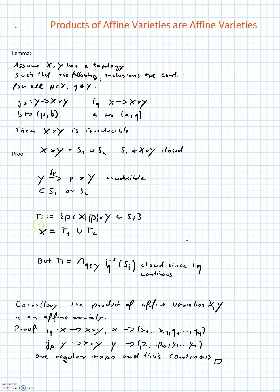So we can define sets Ti as the set of points p in X such that p×Y is a subset of Si, and then we can write X as a union of T1 and T2. But Ti is nothing but the intersection over all q in Y of the pre-images of the maps i(q) of the sets Si, and these are all closed, so the intersection is closed, and so Ti is closed for i equal to 1 and 2.